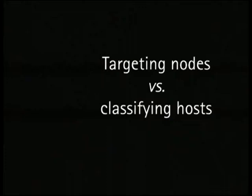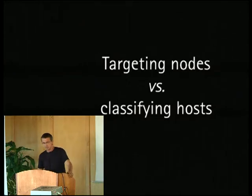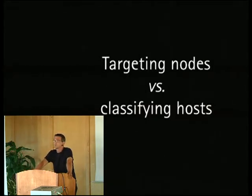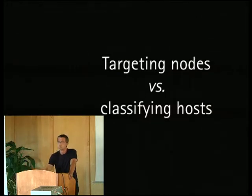One of the core differences between configuration management systems like Puppet, Ansible, and Salt — which also relates to the distinction between the classical system administrator and the cloud provisioner — is that the cloud provisioner thinks about system automation in terms of targeting configuration at nodes, whereas the classical system administrator thinks about classifying a specific host. The distinction between those two is not clear-cut.